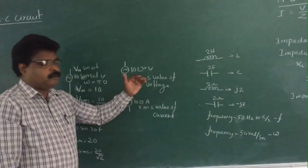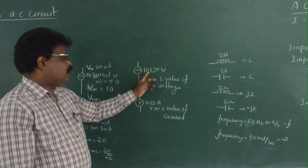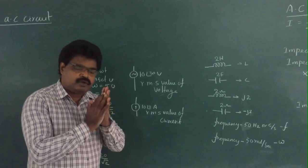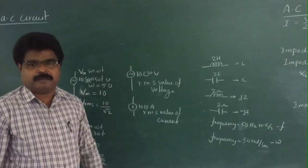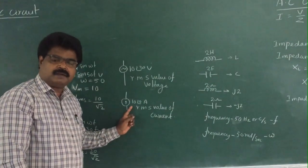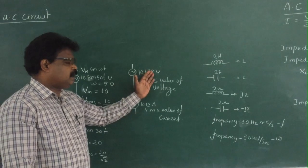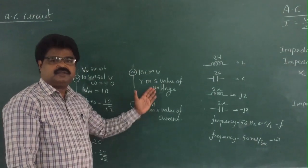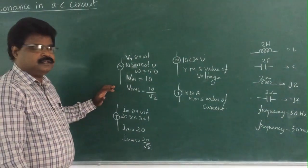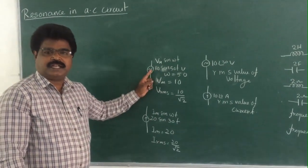In problems we use the RMS value of voltage and current. For example, if a problem gives 10∠30° volts, that is the RMS value of voltage — no conversion needed, substitute directly. Similarly, 10∠0° amperes is the RMS value of current. These phasor-form values are already RMS values.